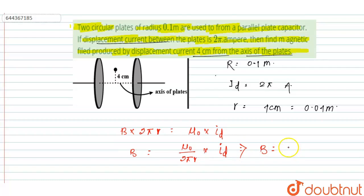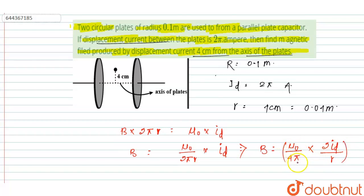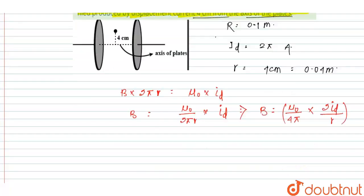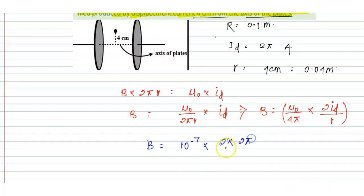This can be rewritten as B equals (μ₀/4π) times (2·id)/r. Since we know that μ₀/4π equals 10 to the power minus 7, the value of magnetic field equals 10⁻⁷ times 2 times id. The displacement current id is 2π ampere, and r is 0.04 meter.